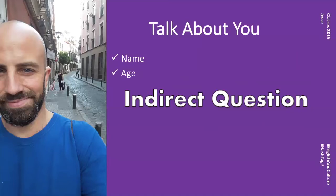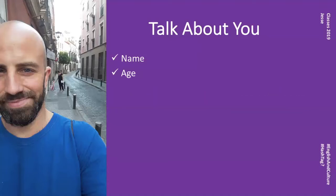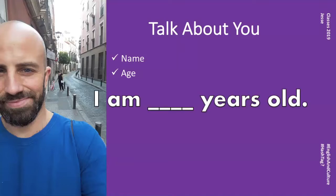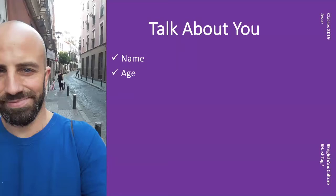But if you state how old you are, make sure it's correct. I am 39 years old. I am 25 years old. He is 15 years old. She is 19 years old. Remember, especially for you Spanish speakers — we don't use 'have' for age. We use 'to be': I am. I am.